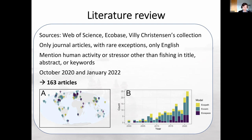I only looked at published journal articles with very rare exceptions — three theses and technical reports where a modeling technique wasn't yet reflected in peer-reviewed literature. I only included literature in English. I read abstracts and titles of over a thousand documents, and only included those that mentioned a human activity or stressor other than fishing in the title, abstract, or keywords. I first searched in October 2020 and updated in January 2022. In the end, my review included 163 articles.